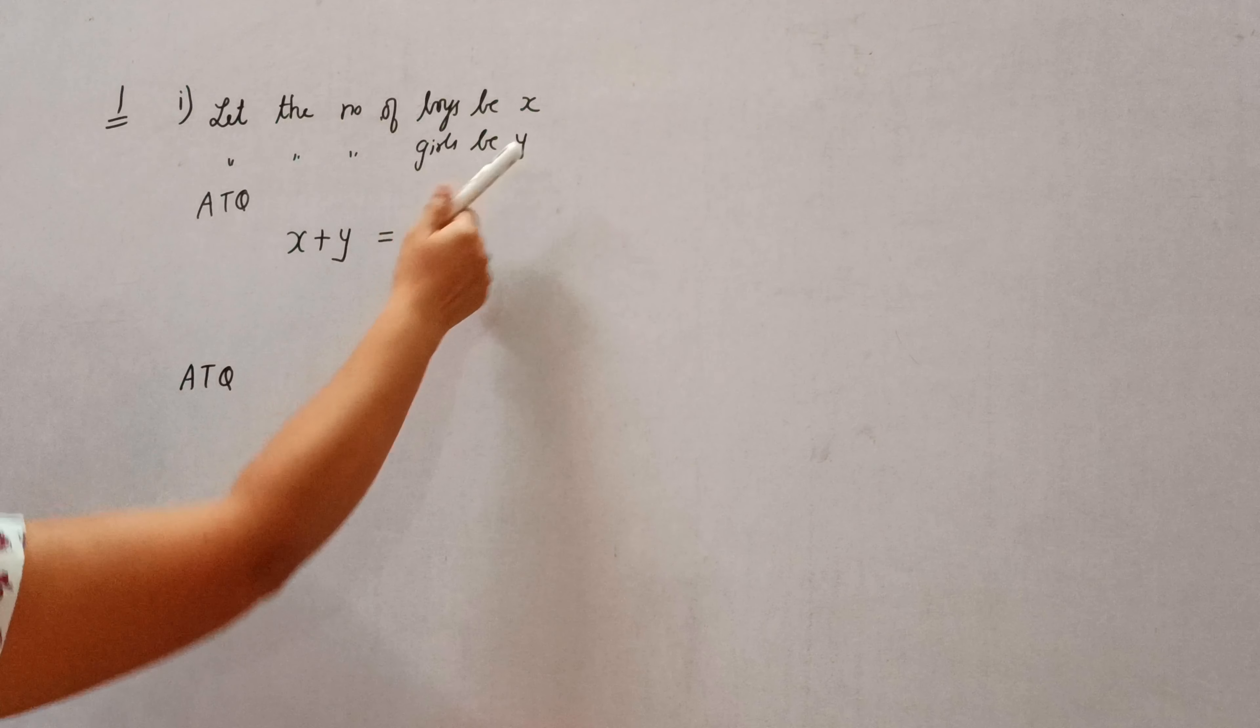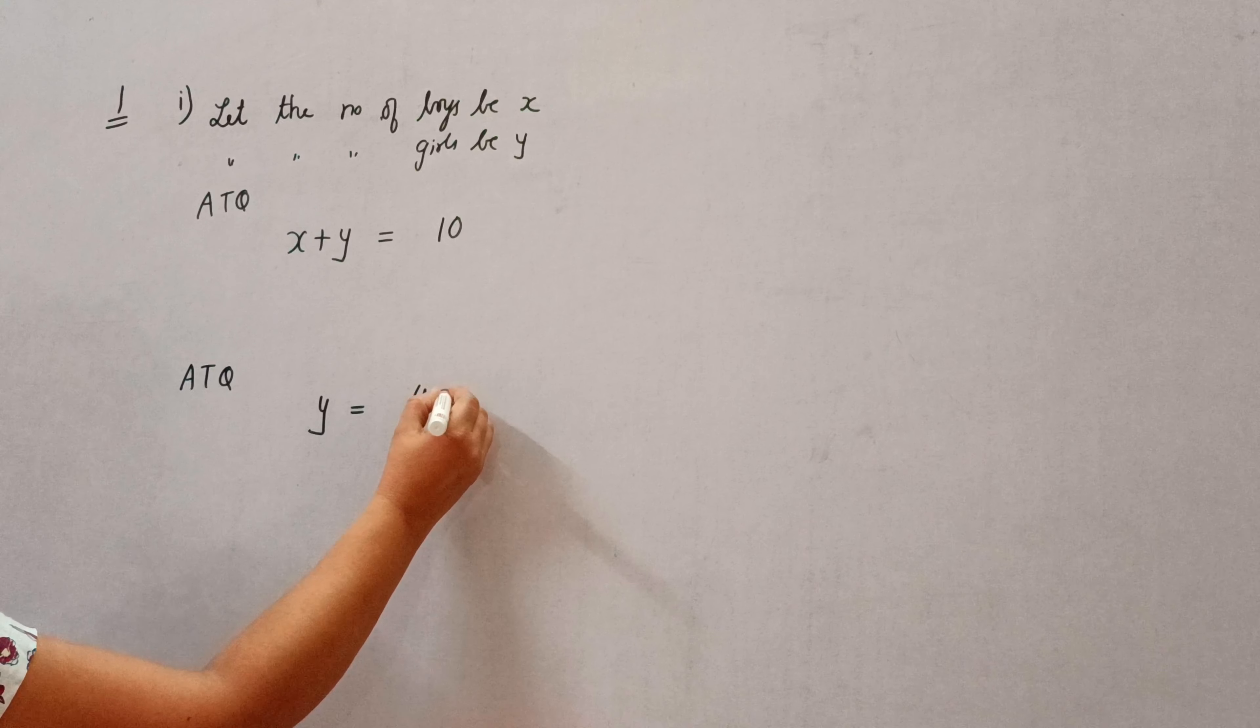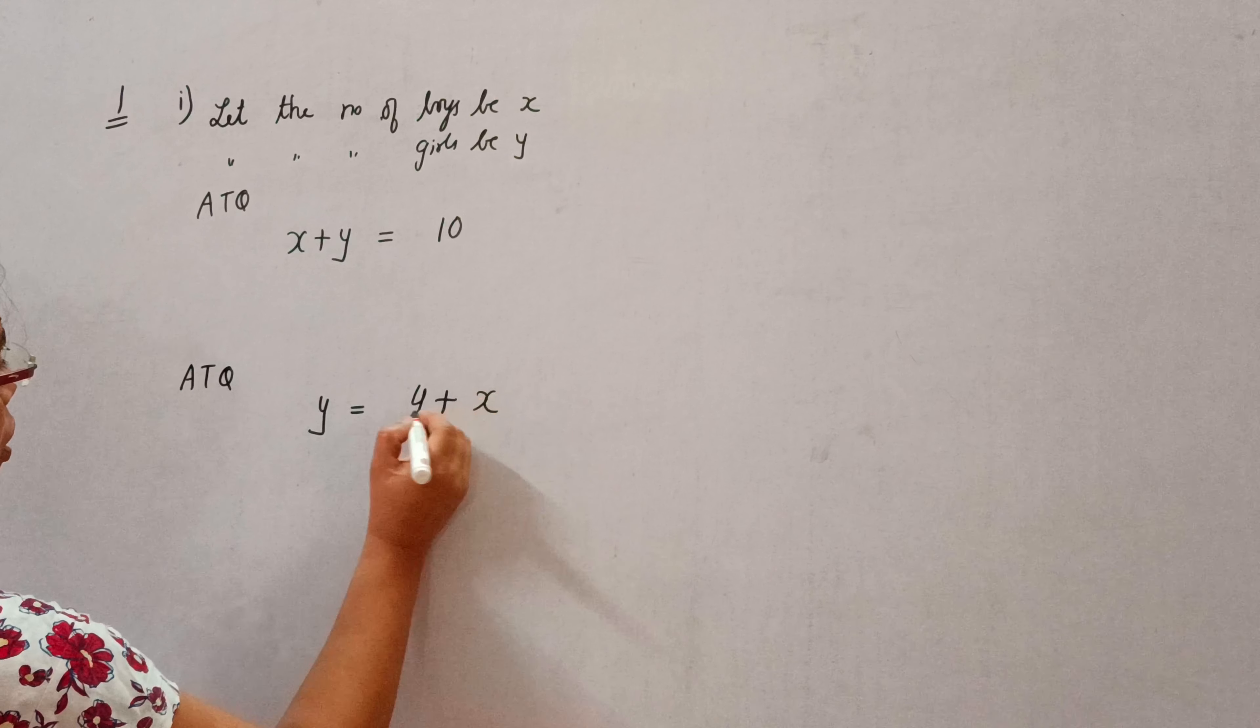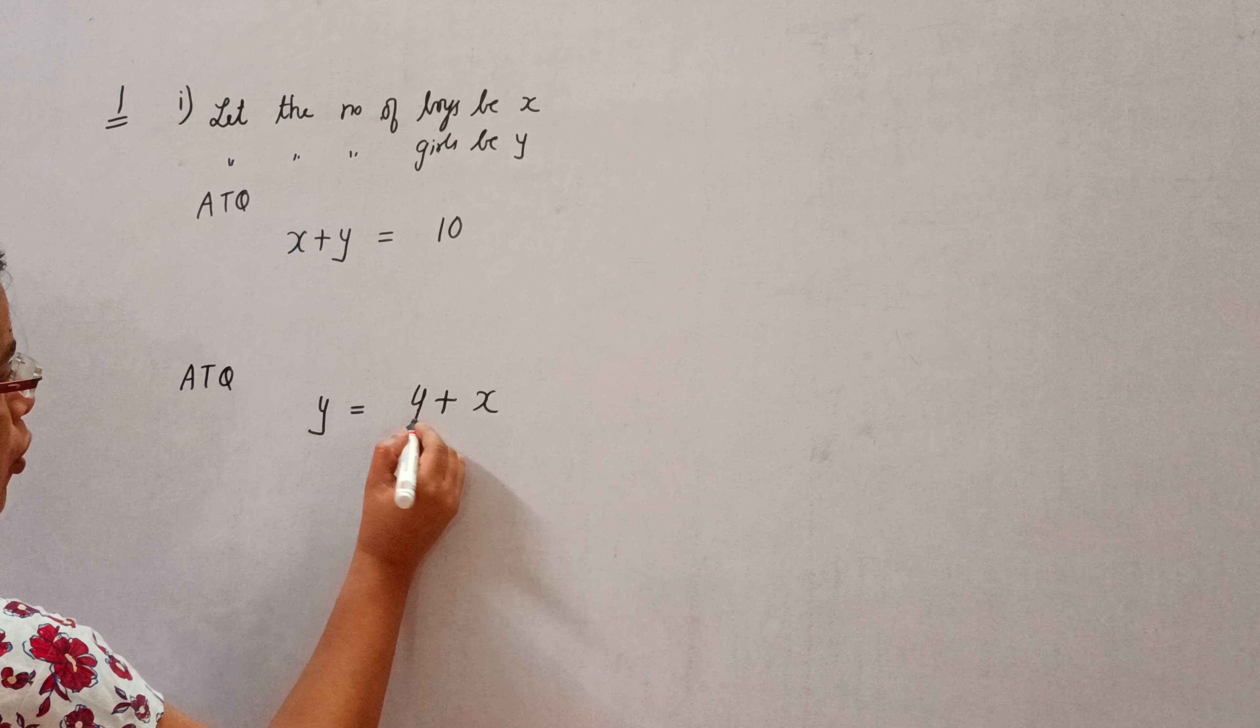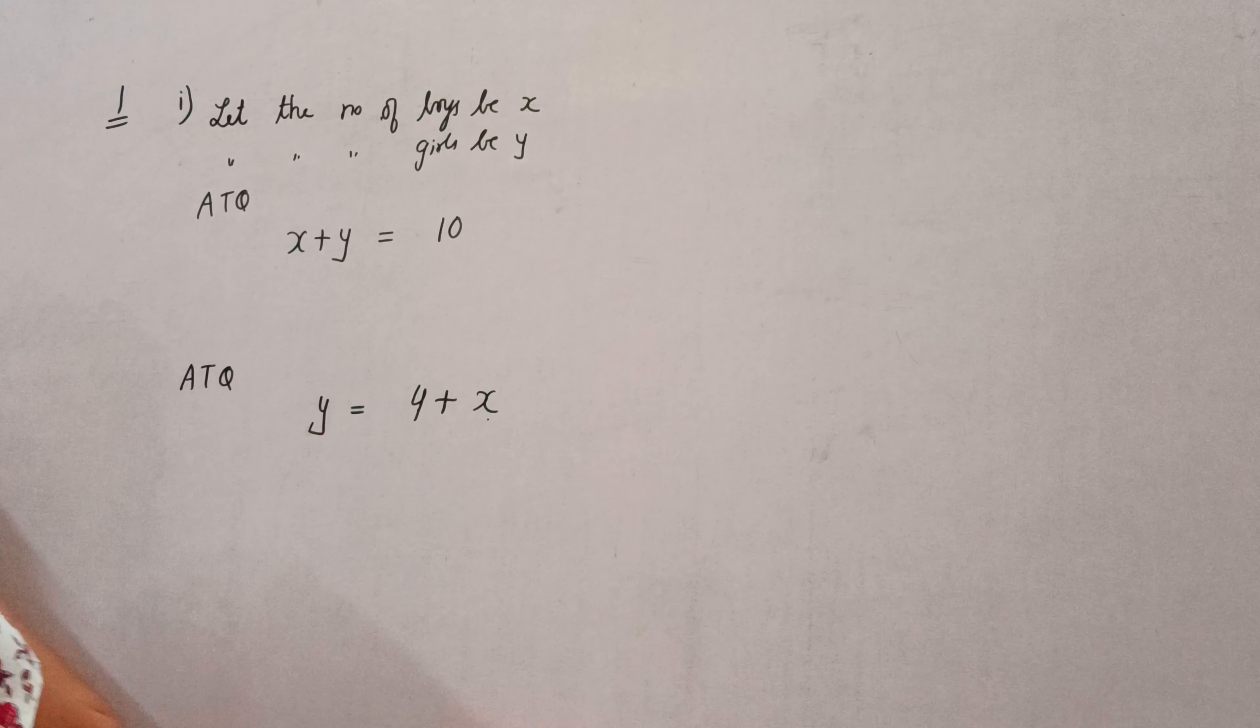And in second situation it is given, if the number of girls that is y, if the number of girls is 4 more than number of boys and number of boys is x, so number of girls is 4 more than the number of boys.